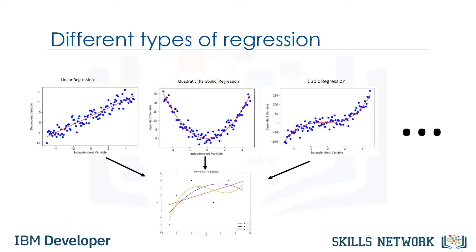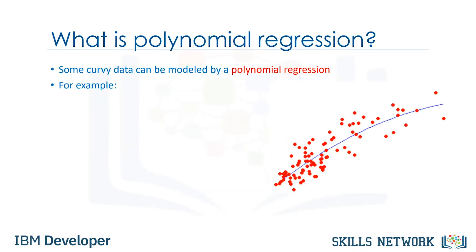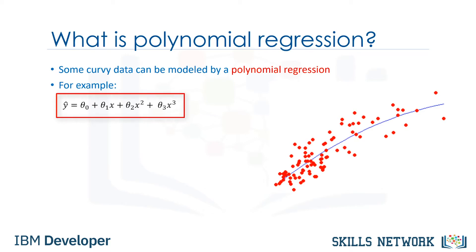With many types of regression to choose from, there's a good chance that one will fit your data set well. Remember, it's important to pick a regression that fits the data the best. So, what is polynomial regression? Polynomial regression fits a curved line to your data. A simple example of a polynomial with degree 3 is shown as y-hat equals theta 0 plus theta 1 x plus theta 2 x squared plus theta 3 x cubed, where thetas are parameters to be estimated that make the model fit perfectly to the underlying data.